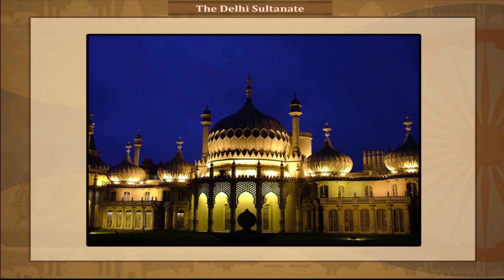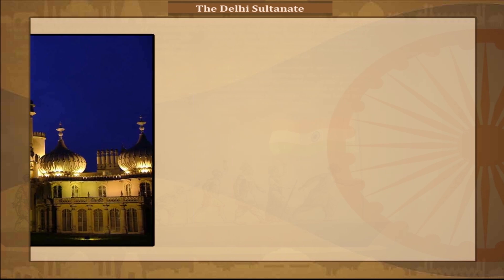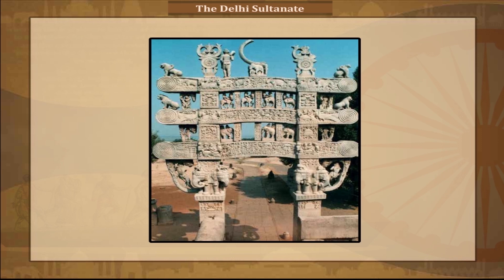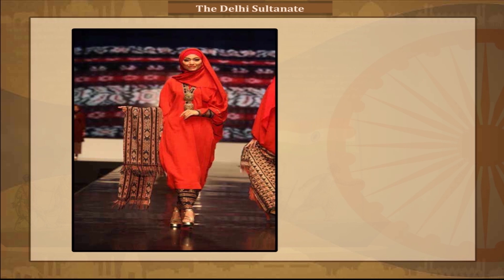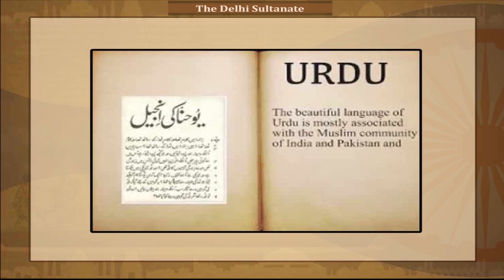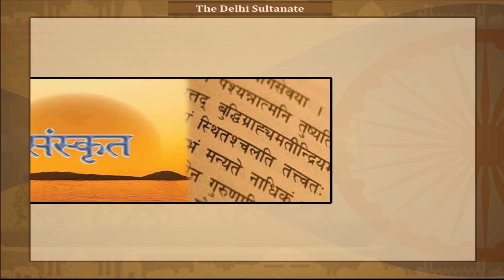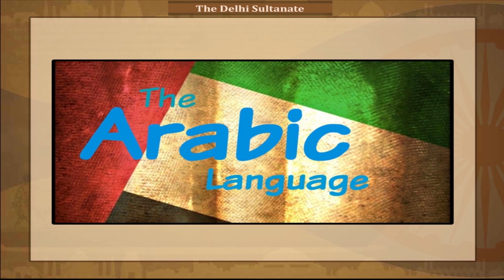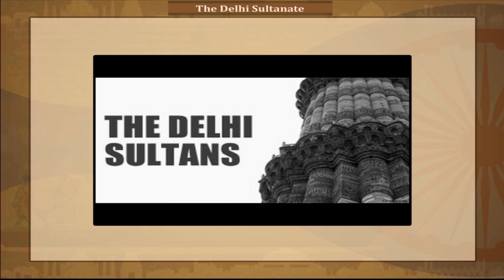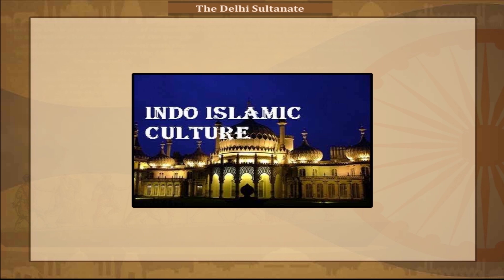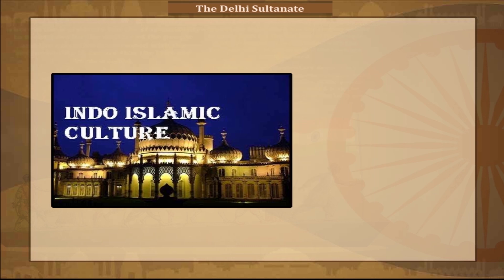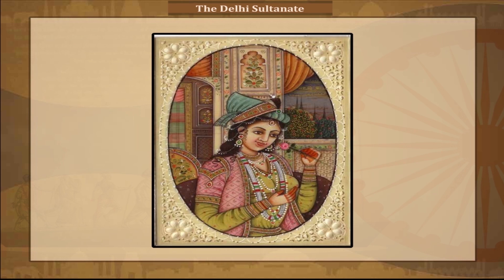The Sultanate ushered in a period of Indian cultural renaissance. The resulting Indo-Muslim fusion of cultures left lasting syncretistic monuments in architecture, music, literature, religion, and clothing. It is surmised that the Urdu language — literally meaning 'horde' or 'camp' in Turkic dialects — was born during this period as a result of the intermingling of local speakers of Sanskritic Prakrits with immigrants speaking Persian, Turkic, and Arabic under Muslim rule. The Delhi Sultanate is also the only Indo-Islamic empire to have enthroned a female ruler in India, Razia Sultan (1236–1240).